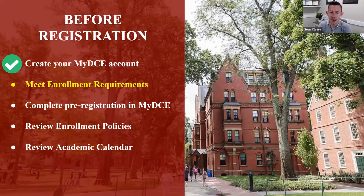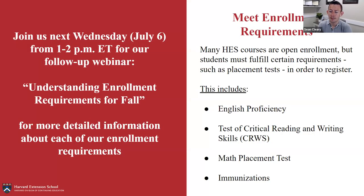Now let's talk about enrollment requirements. There's a follow-up webinar on Understanding Enrollment Requirements for the Fall, presented by our Enrollment Requirements team on Wednesday, July 6th from 1 to 2 p.m. Eastern Time — highly recommended for more detail. Enrollment requirements include English proficiency for students whose native language is not English; the test of critical reading and writing skills (the CRWS test), required for all writing-intensive courses; the math placement test, an optional test for math course readiness; and immunizations, some of which are required for on-campus courses.